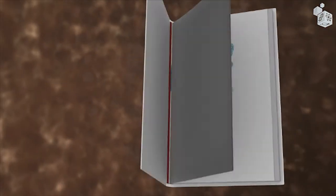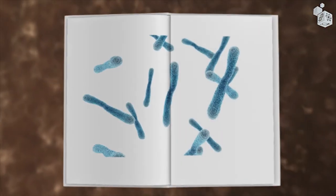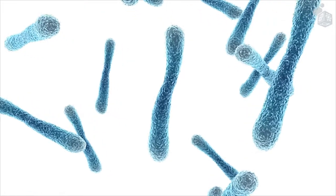Inside the zygote is a set of instructions to build and make the new organism fully operational. We call this instruction manual genetic material.